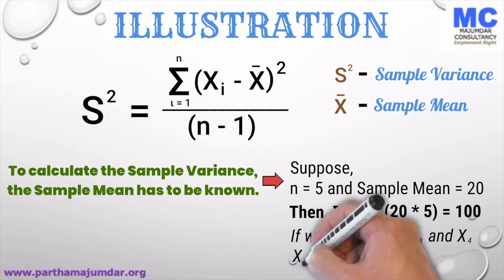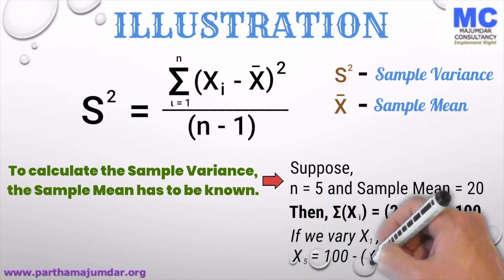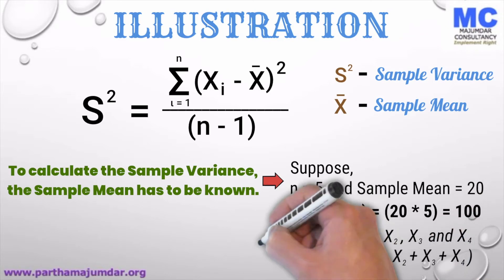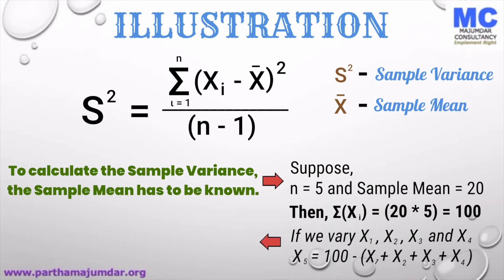Now if we vary x1, x2, x3, x4, then x5 has to be 100 minus x1 plus x2 plus x3 plus x4. Because x1 plus x2 plus x3 plus x4 plus x5 has to equal 100.